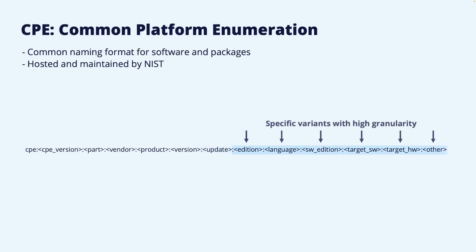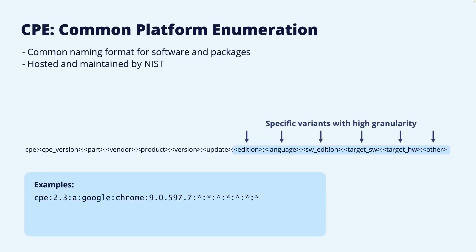Then the granularity increases for each new part, and it is possible to, for example, specify specific language versions of a product or which hardware target that the build is made for. As a few examples, here is a CPE for a version of the Chrome web browser. It is an application, the vendor is Google, the product is Chrome, and the version is 9.0.597.7. The asterisk used for the final seven parts is a wildcard character, so it should match all variants with this version number.